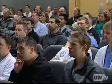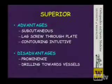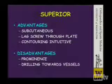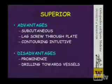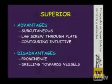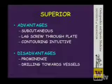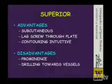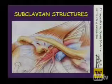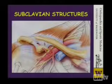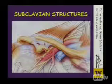For superior plating, the advantages are that it's a subcutaneous approach; you can almost always put a lag screw through the plate, and contouring is more intuitive because you're looking directly down on the S-shaped curve. The disadvantages are that implants are prominent, especially the thicker ones, and you are drilling toward the great vessels. The subclavian artery and vein and plexus are in close proximity — right under the clavicle in the middle third — so plunging with a drill would not be advisable.